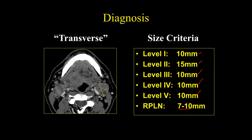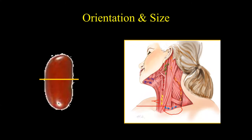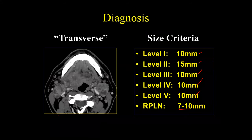We measure lymph nodes in the transverse plane. For levels 2, 3, and 4 we measure the transverse dimension; for level 1 and level 5, we're measuring in a different plane — which is one of the weaknesses of the size criteria. We have been using this size criteria for 25 years, based on a prospective study done in the mid-1990s. These are the standard accepted size criteria for assessment.